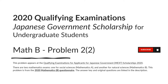This problem appears at the Qualifying Examinations for Applicants for Japanese Government or MEXT Scholarships 2020. There are two mathematics exams: one for Social Sciences, Mathematics A, and another for Natural Sciences, Mathematics B. This problem is from the 2020 Mathematics B questionnaire. The answer key and original questions are linked in the description.